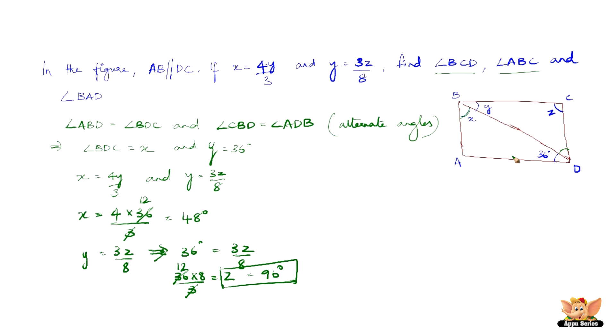Now, in triangle BAD, we have angle BAD plus angle ADB plus angle ABD equal to 180 degrees. We know both these angles: ADB is 36 and ABD is X, which is 48 degrees. So we just need to find angle BAD as asked in the question.